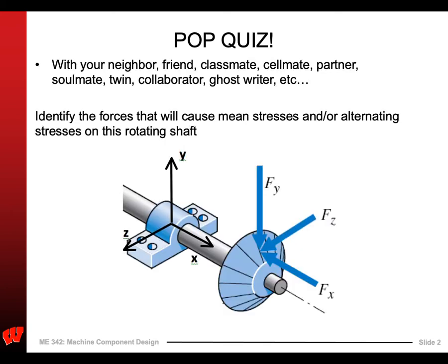Okay, first, pop quiz. Here we have what looks like some sort of a helical gear or a bevel gear, and it's got a radial force, a tangential force, and it's got an axial force too. My question is: which of these causes mean stresses and/or alternating stresses? Identify which ones cause mean, which ones cause alternating. Pause now and see if you can figure this out.